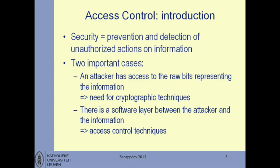As an introduction to access control, let's scope the problem broadly. If you think of security as techniques to prevent and/or detect unauthorized actions on information, you can distinguish two important sub-cases. One is where the attacker has access to the raw bits representing the information — for example, if the attacker can sniff the network cable, listen to wireless transmissions, or steal your hard disk. In that case, all you can do is cryptography.